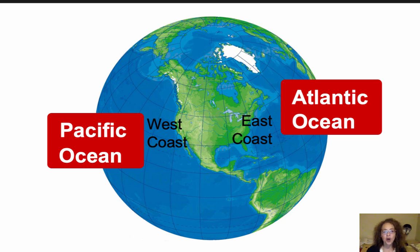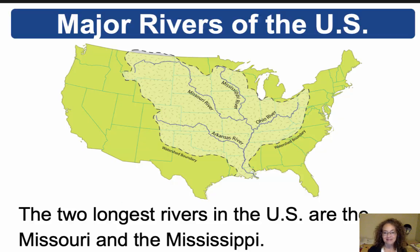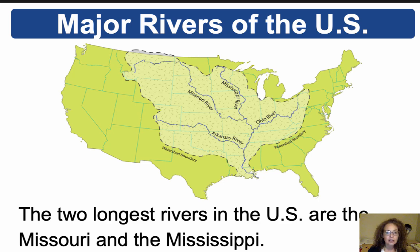The U.S. has borders on two oceans. On the west coast, we have the Pacific Ocean, and on the east coast, we have the Atlantic Ocean. The two longest rivers in the United States are the Missouri and the Mississippi. These rivers are an important part of the expansion of the United States and have been used for many things such as trade, food, drinking water, major shipping routes, and exploration.